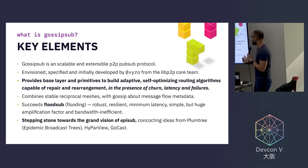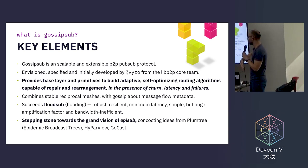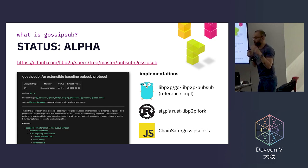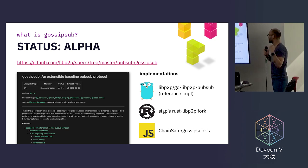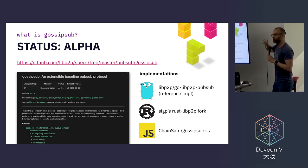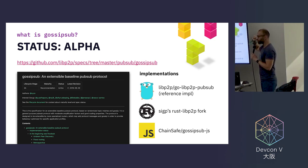GossipSub is a stepping stone towards the grand vision of EpiSub, which concocts ideas from Plumtree, HyParView, and GoCast. Important warning: the spec of GossipSub is currently alpha — this is very important for people to understand. It is a protocol we're going to continue iterating on, and it's a stepping stone towards this more stable and feature-complete protocol called EpiSub.